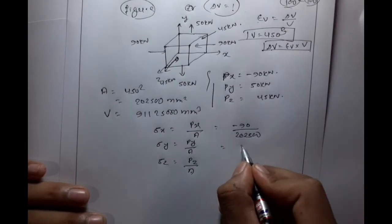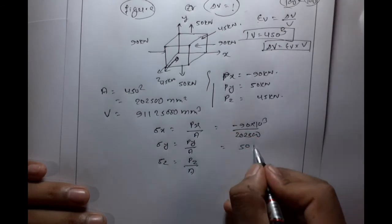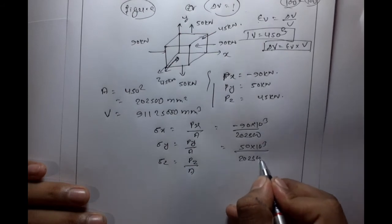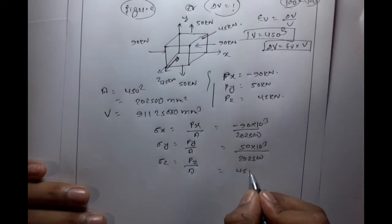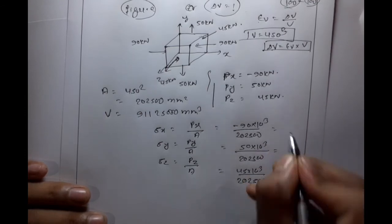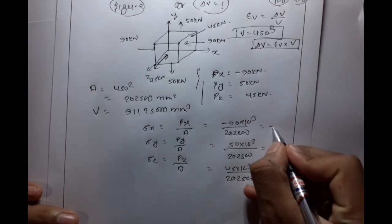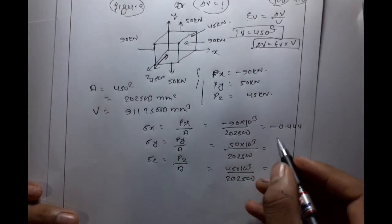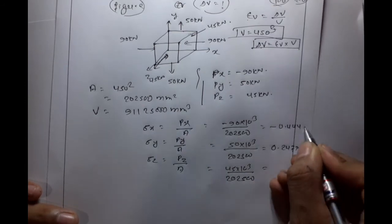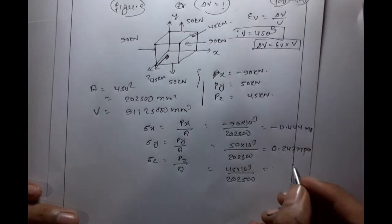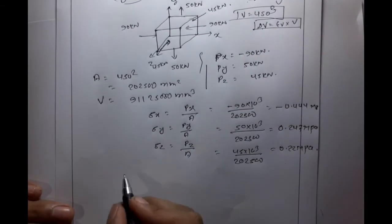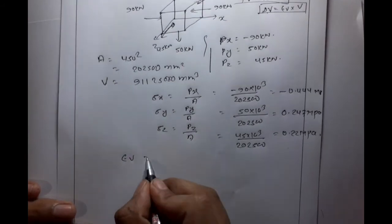Sigma X = minus 90 x 10^3 / 202,500. Sigma Y = 50 x 10^3 / 202,500. Sigma Z = 45 x 10^3 / 202,500. Therefore Sigma X = minus 0.444 MPa, Sigma Y = 0.247 MPa, and Sigma Z = 0.222 MPa.